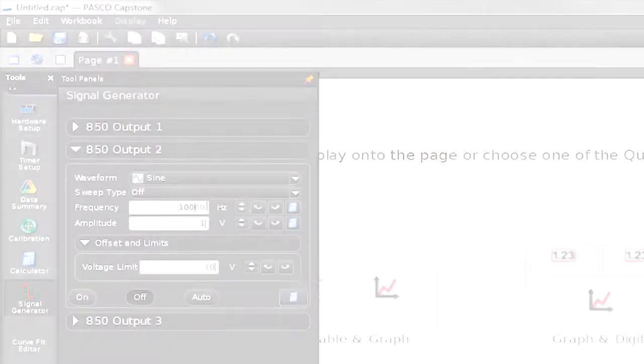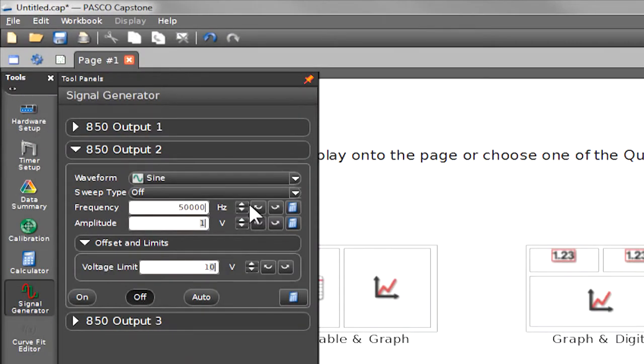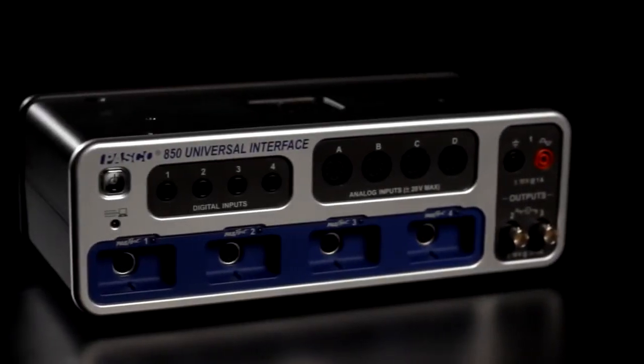In addition to that, we have two high-speed outputs that go up to 500,000 hertz, and these can be used for circuit analysis and for generating signals. And the 850 is truly a universal interface.